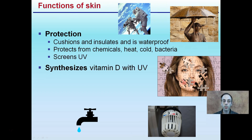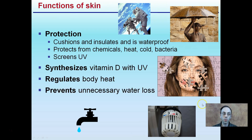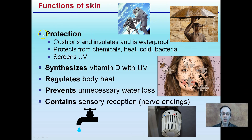Some of the functions of the skin — there are a couple of major ones. Protection: it cushions, insulates, and acts as waterproofing. It protects from chemicals, heat, cold, and bacteria, and screens UV light — ultraviolet light. You can think of it like a spacesuit, offering protection from the harsh outside environment.